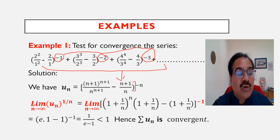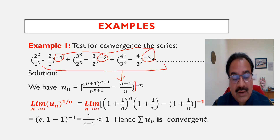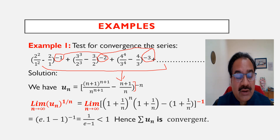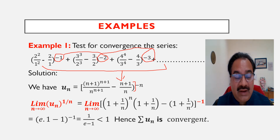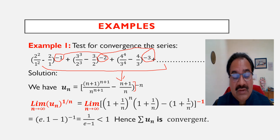Now apply the root test. Limit as n tends to infinity of u_n^(1/n) equals — after some simplification, taking n outside — you get n^(n+1) · (1 + 1/n)^(n+1) in the numerator and similarly n^n · (1 + 1/n)^n in the denominator. After making these simplifications you arrive at the next step.